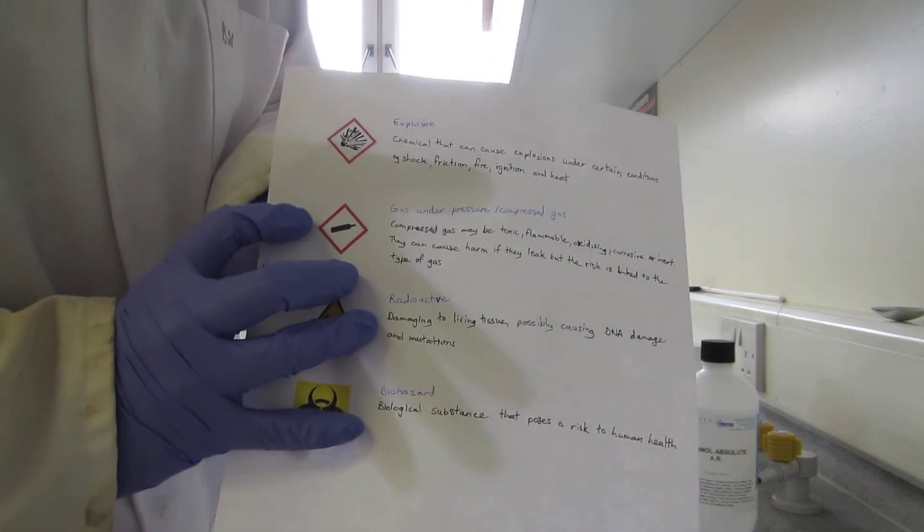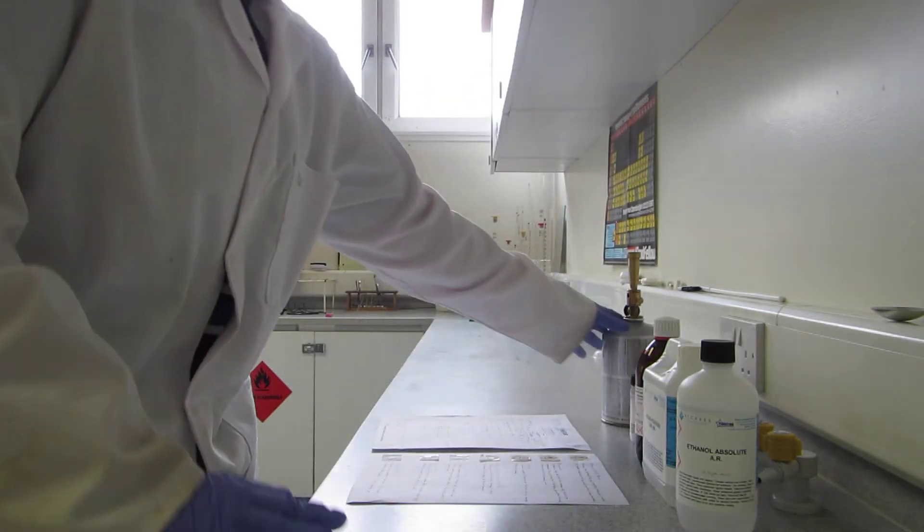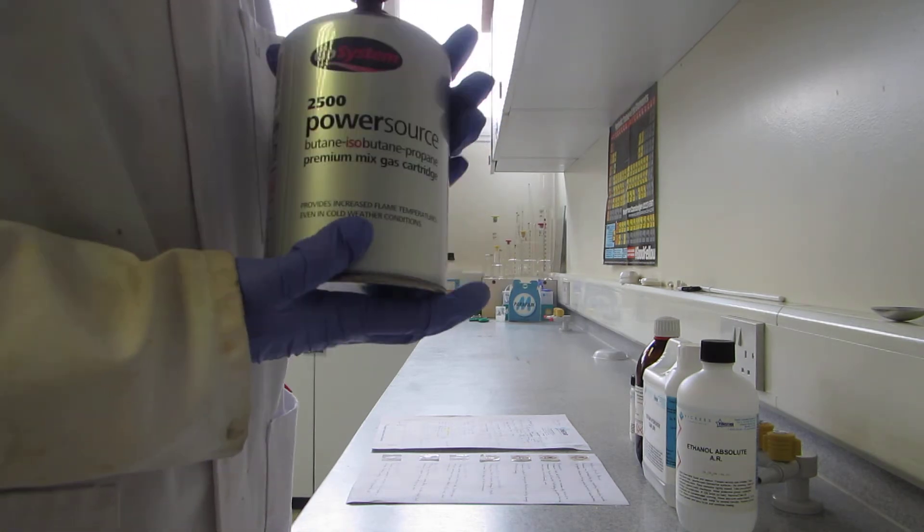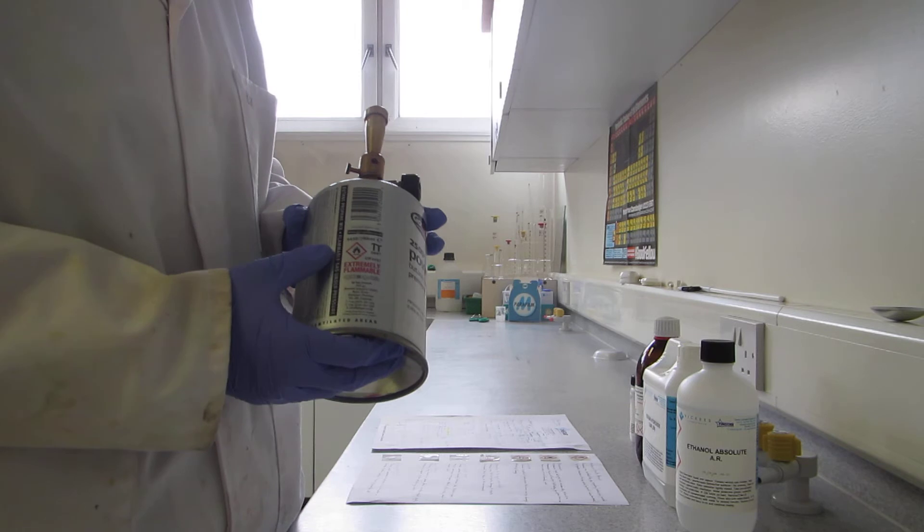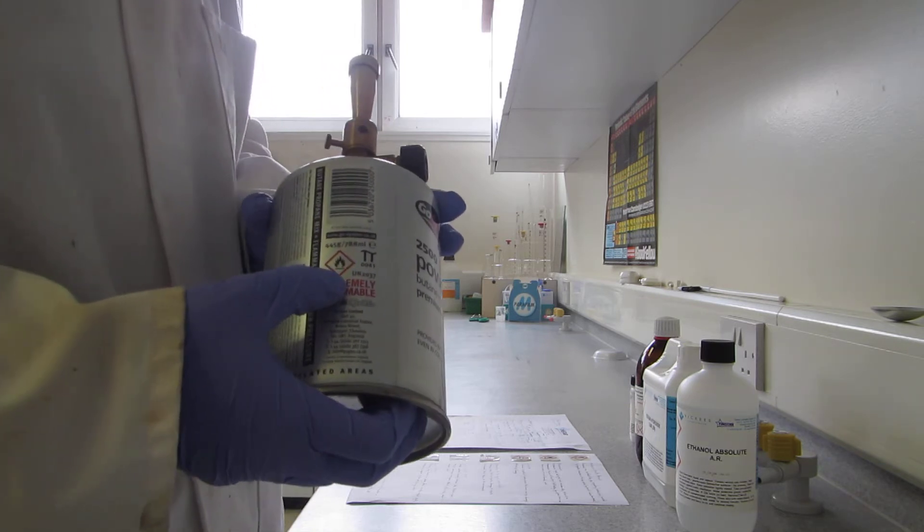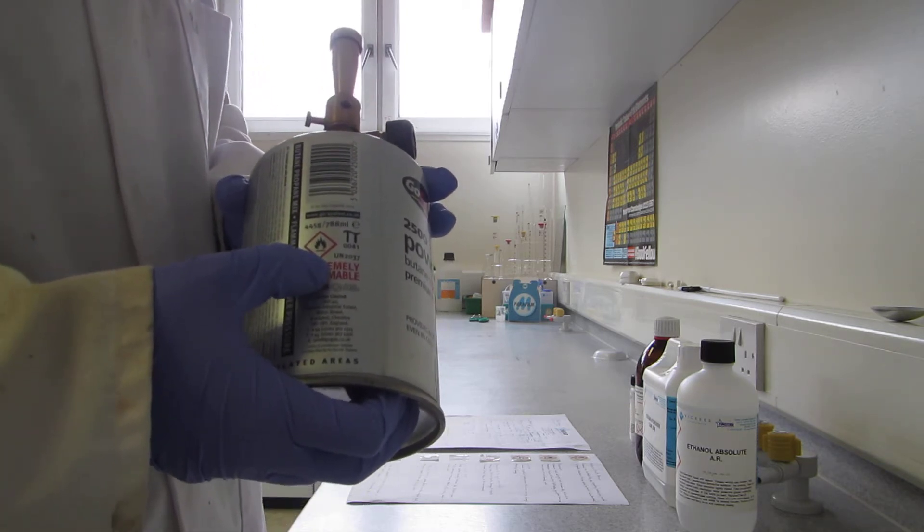You can also have the symbol for a compressed gas cylinder. I have a butane gas cylinder here for a portable Bunsen burner. It doesn't actually carry the compressed gas symbol, but it does have a flammable symbol.